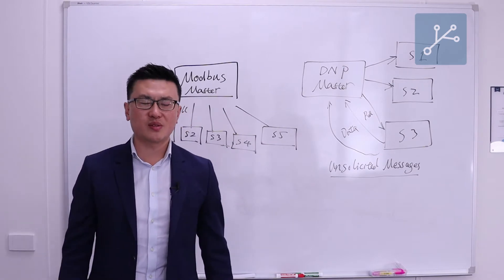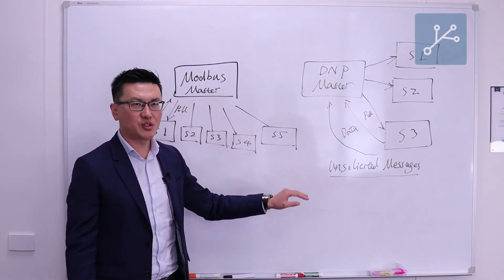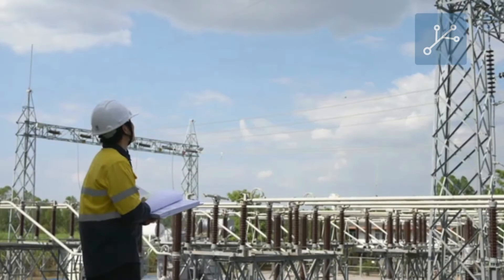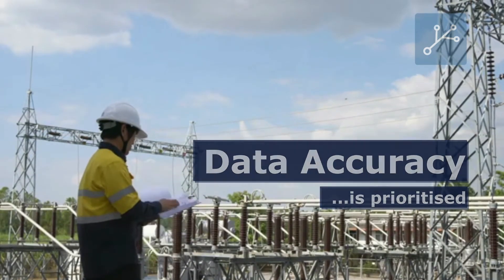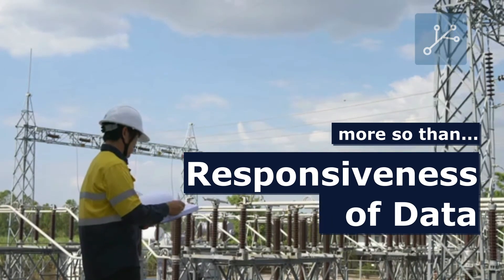In some other circumstances, we want to turn unsolicited messages off. For example, in the power system industry, the user is more concerned about the certainty of the data than the immediate acknowledgment about their site alarms.